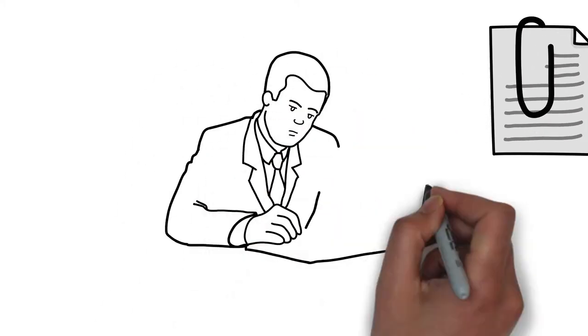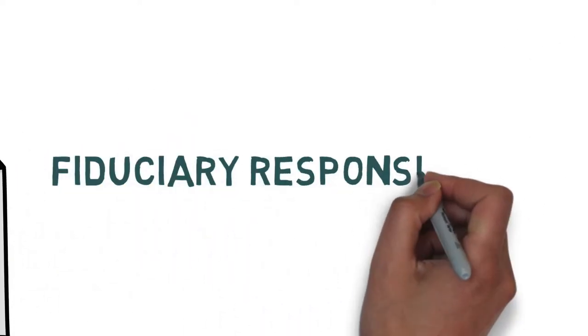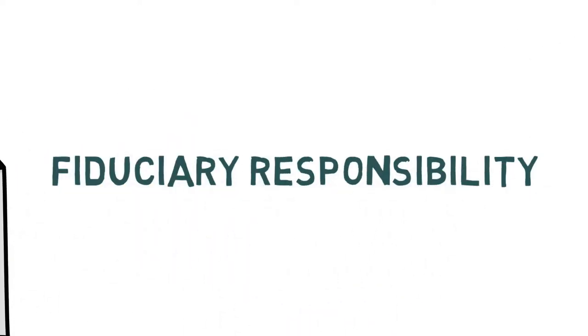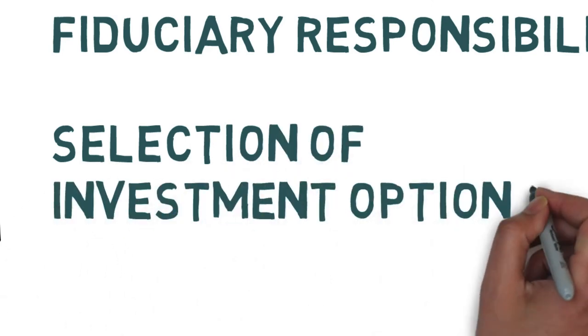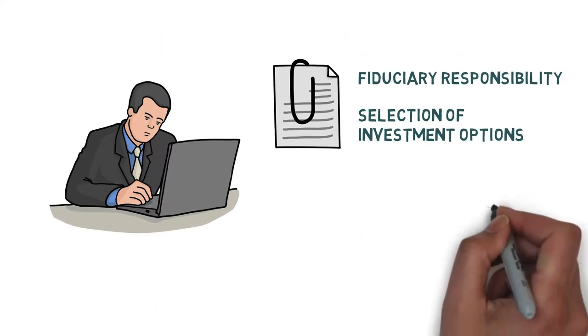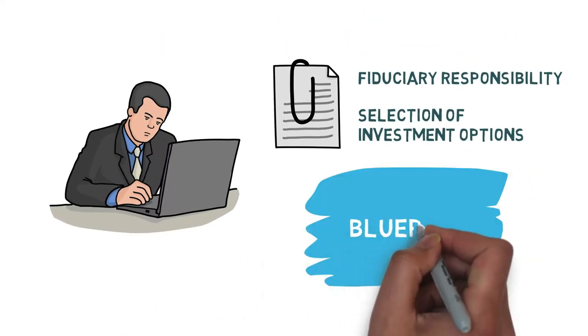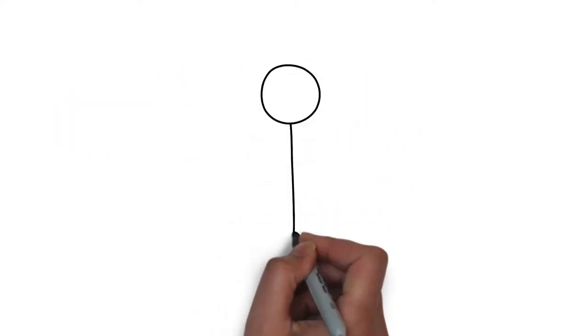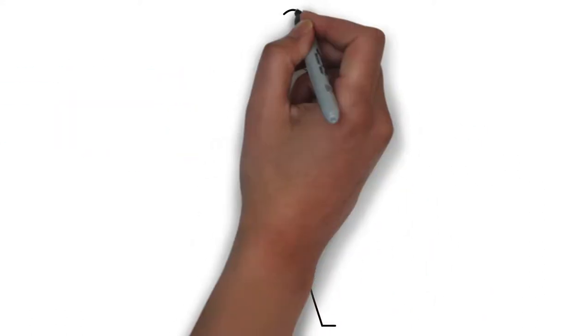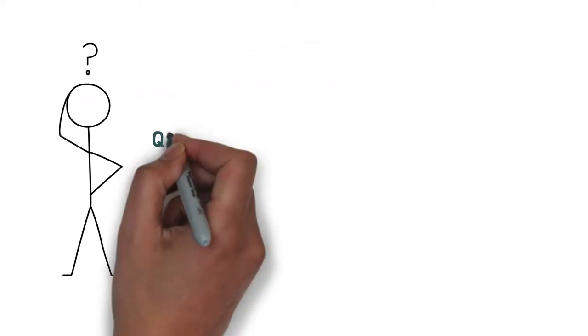An investment policy statement is a document drafted to assist the plan sponsor in satisfying his or her fiduciary responsibility with respect to the selection of investment options. It's both a blueprint and a report card, as it helps in effectively supervising, monitoring, and evaluating the investment of plan assets.